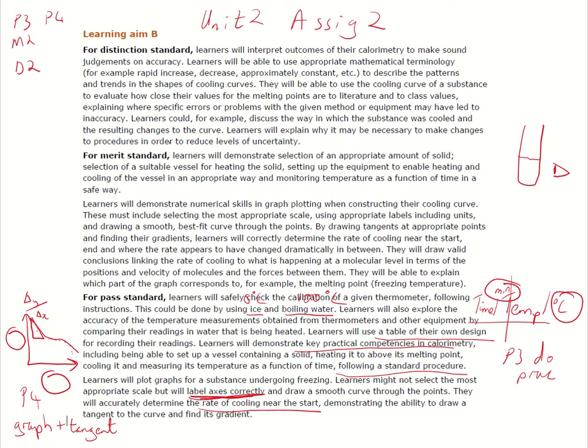Setting up the equipment to enable heating, generally fairly straightforward, you're just heating it up with a Bunsen and then you'll have it sitting resting in a beaker or maybe just clamped around, or you can use hot water as well to heat it up, whichever.